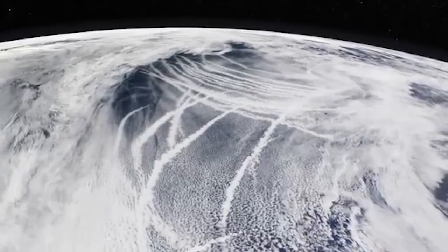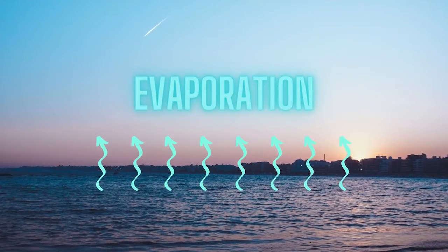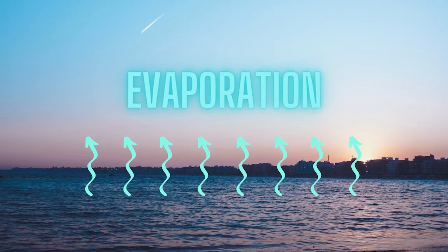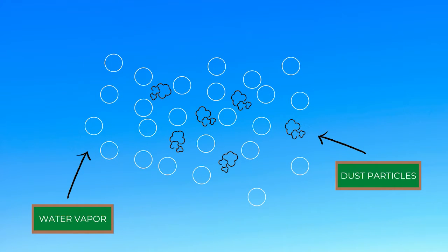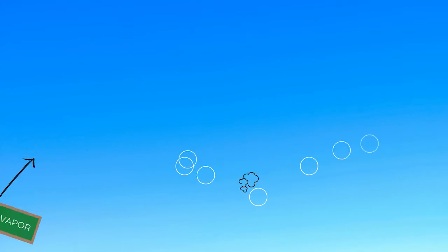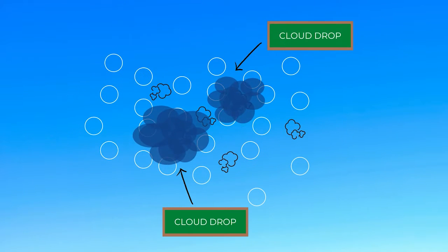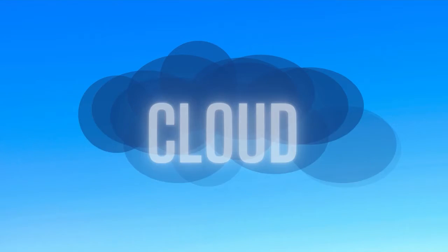The whole process has everything to do with evaporation at Earth's surface. Water vapor from the surface floats in the atmosphere. As water vapor moves throughout the atmosphere, it latches onto dust particles. Once this happens, very tiny water droplets form. A large amount of water droplets condensing creates cloud drops. Eventually, the amount of cloud drops gather together to make a cloud.